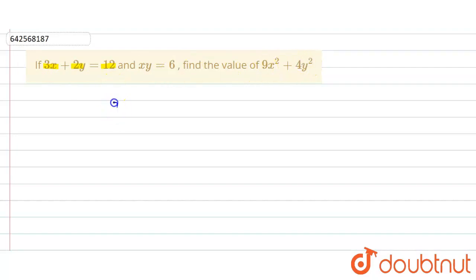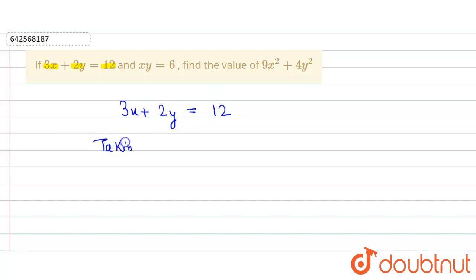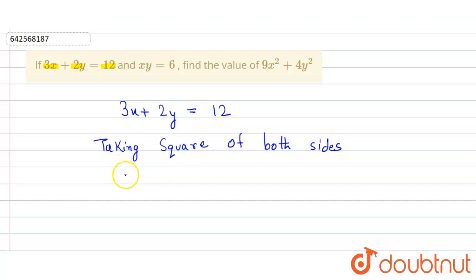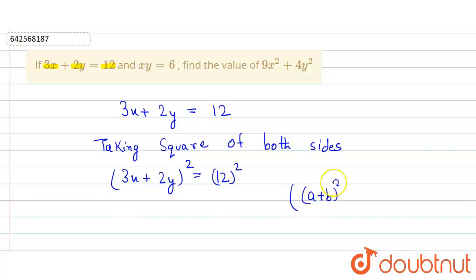It is given that 3x plus 2y is equal to 12. Now we take the square of both sides, so 3x plus 2y whole square is equal to 12 squared.